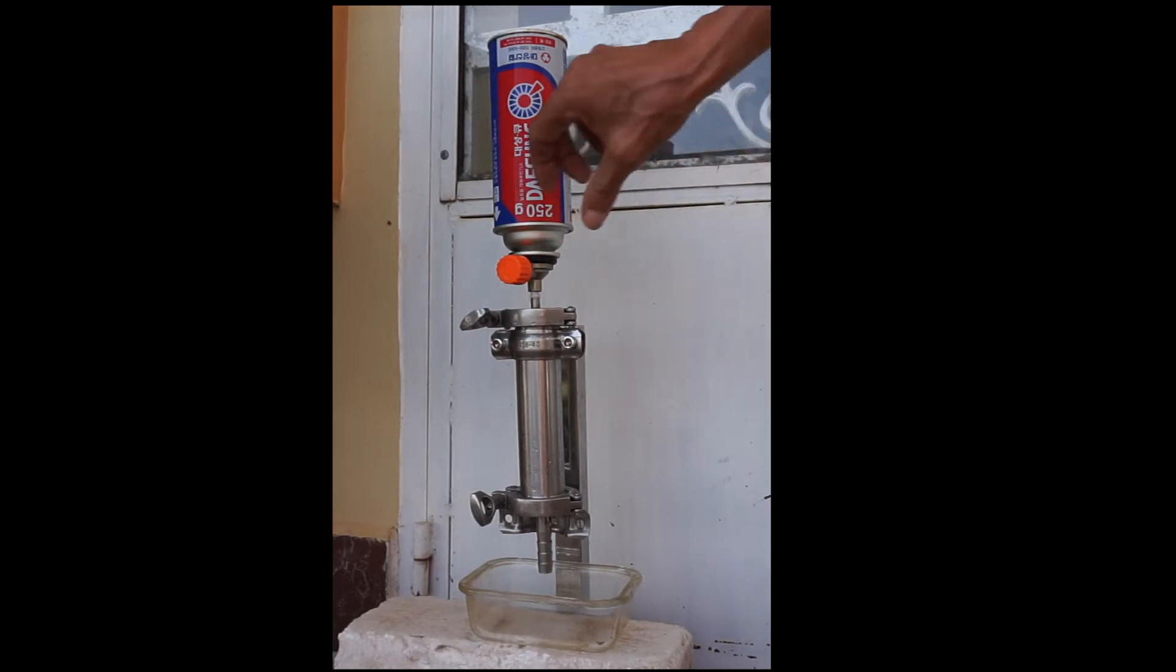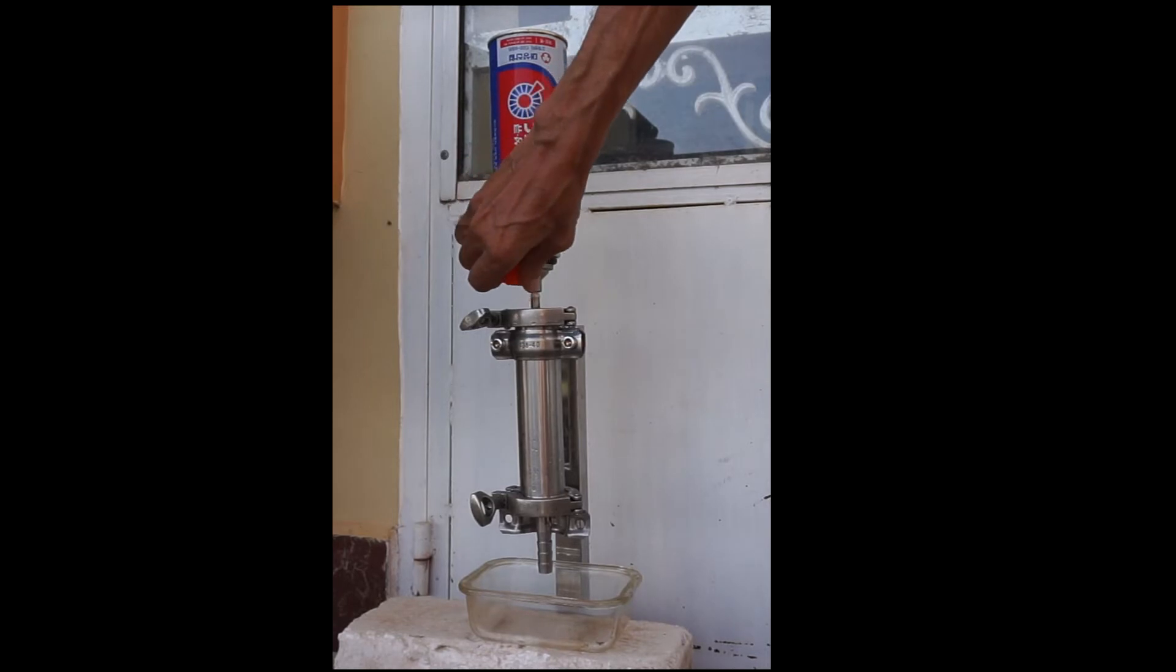Condensation should be wiped off to prevent water dripping into the liquid butane. A layer of frost quickly grows on the tube when the valve is opened.